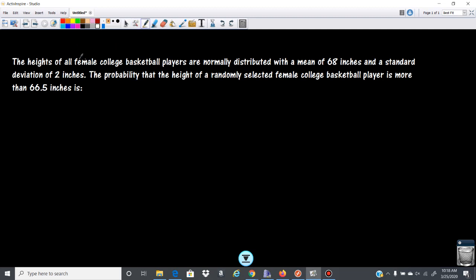Okay, so we are looking at a population because we have the word all here. What we want to do again is standardize the score. So we're looking at the probability that x is more than 66.5, so we standardize the score.